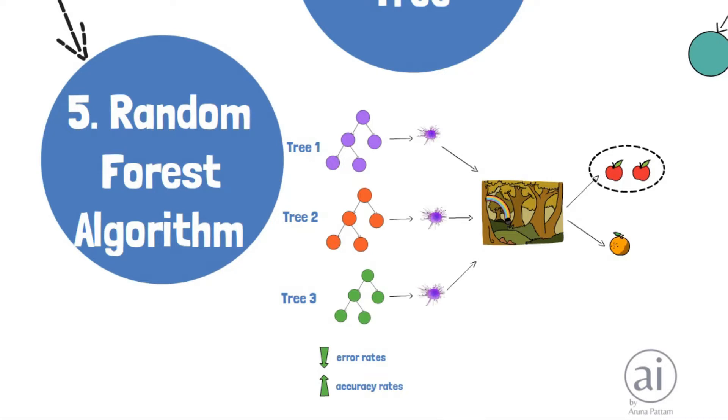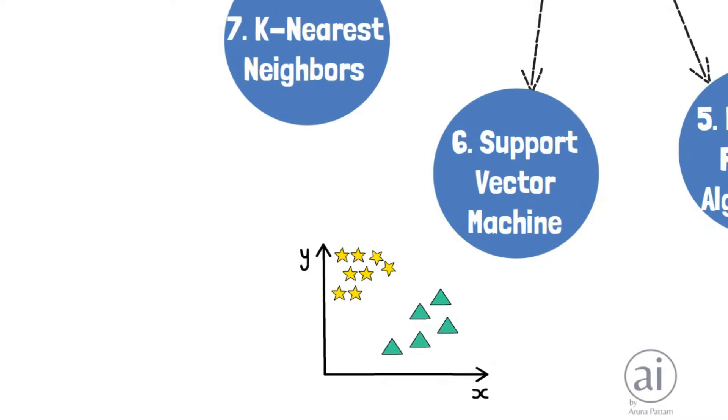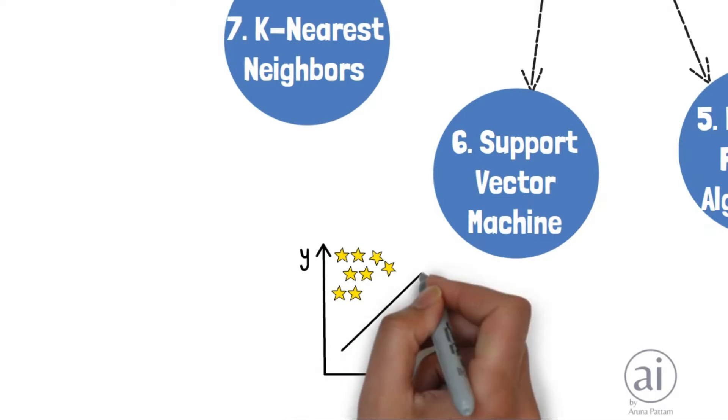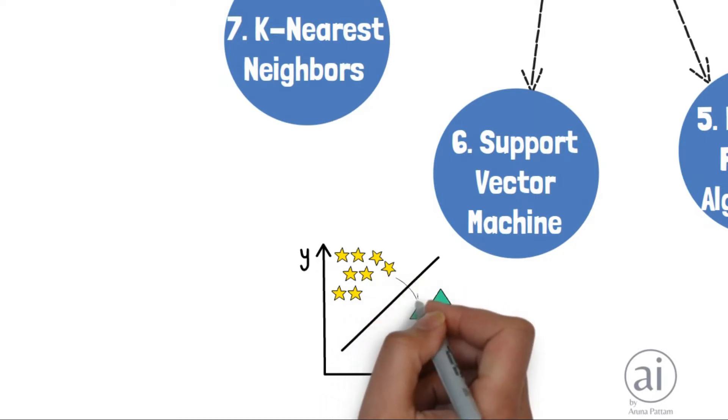Support vector machine: this method separates data by drawing a line between groups of points that lie on the outages, maximizing the distance from one group to another. For example, face detection, classifying parts of images as face and non-face.